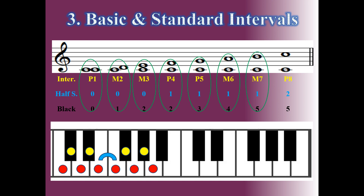DO to SI is the major seventh interval. The major seventh interval has seven white keys, five black keys, and one half step.